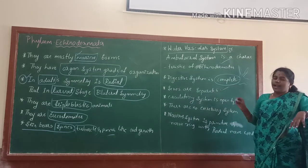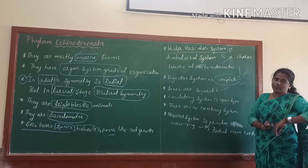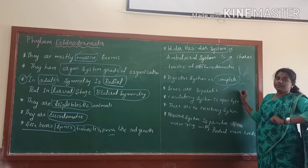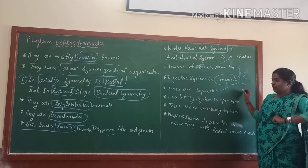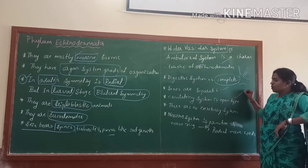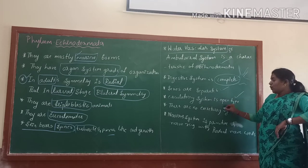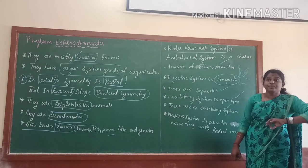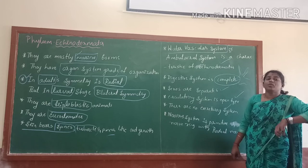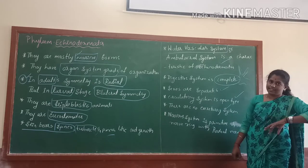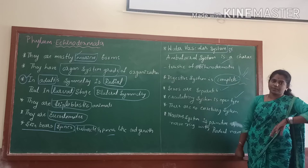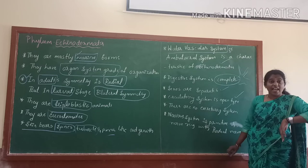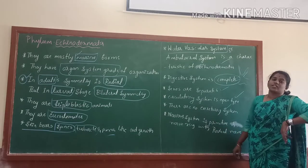Sexes are separate and they reproduce by sexual reproduction. There is no separate excretory system — all excretory products are expelled out by the anus, and the water vascular system carries their excretion. That is why they do not have a distinct excretory organ.